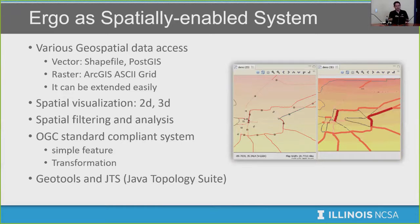Ergo is a spatially enabled system with GIS support. We support various geospatial data access: vector formats like shapefile and PostGIS, and raster formats like ArcGrid and GeoTIFF. It can be extended easily — we use the Java GeoTools library, which is very popular, so any format supported by GeoTools can be plugged into our ecosystem quickly. We also provide geospatial visualization in 2D and 3D, geospatial filtering and analysis, and we follow OGC standard compliance including simple feature specification and transformation specification.